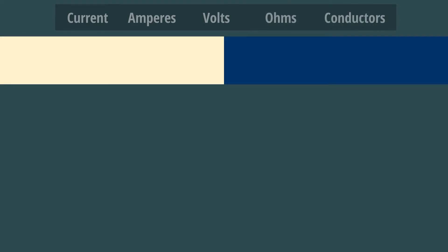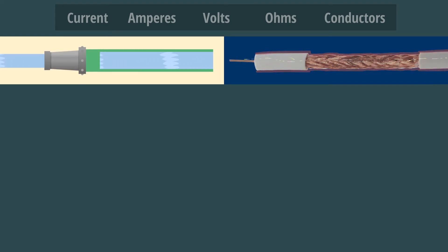To explain these terms, it might be easier to compare water in a garden hose to electricity in a wire. We will use simple analogies to define them.